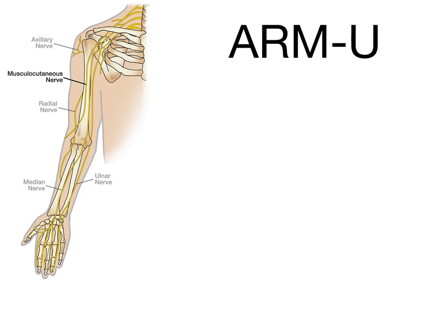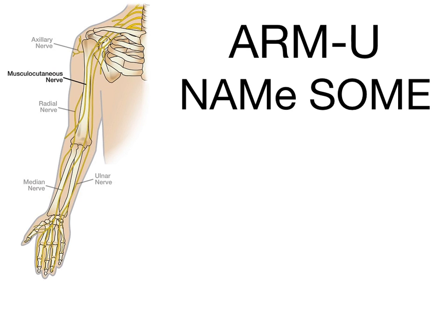You're trying to learn the upper extremity nerves, aka the nerves in the arm. So let's go to Arm University. Arm University is important and you should be able to name some of the nerve injuries that will classically be asked on USMLE and COMLEX. So this is the mnemonic — just by using the phrase 'Arm U' and 'name some,' we're going to correlate all of the upper extremity nerves to their corresponding injuries.